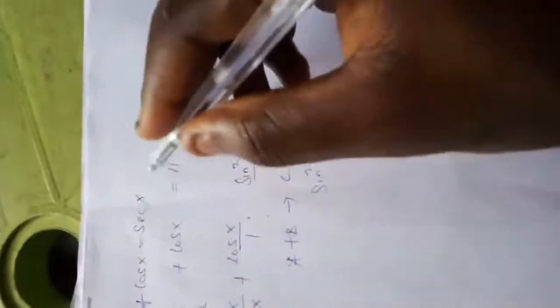So this has been proved. 1 over cos x equals sec x. So it has been proved.